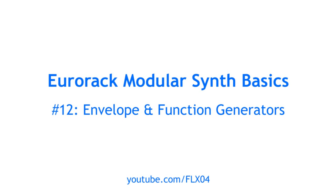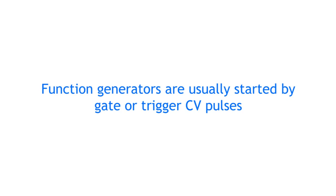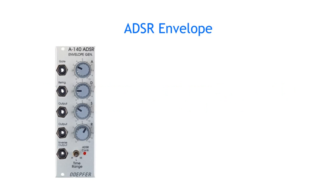Let's have a look at another important building block in synthesizers in general. Envelopes, or so-called function generators, create CV signals which change over time according to specific rules or mathematical functions. They are usually started or triggered by a gate or trigger pulse and stop after they are done going through their rule set. A very common function generator is the ADSR envelope, which has four stages that generate different CV signals after one another.